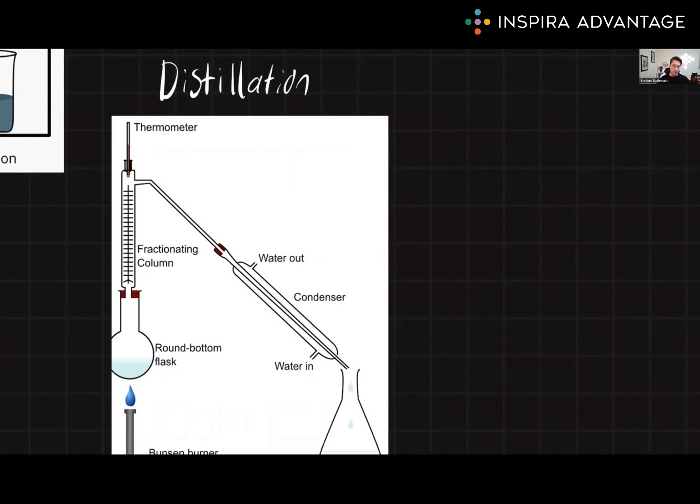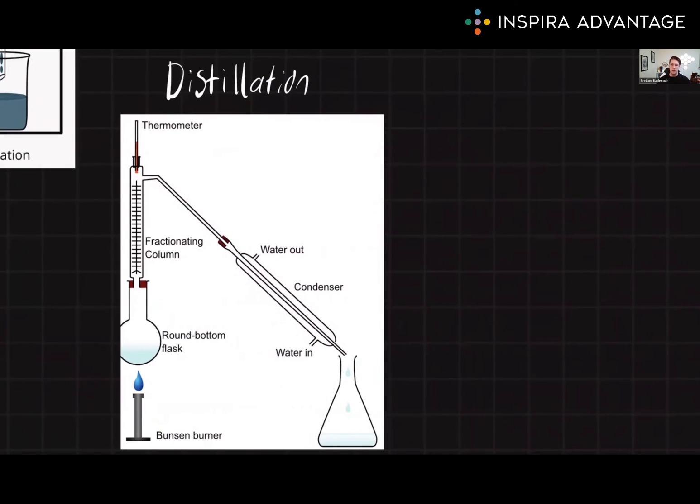Finally, we have distillation. Distillation is used to separate liquids based on their boiling points. During distillation, a mixture of liquids is heated to boiling, and the vapors are condensed and cooled in a separate container. The collected vapors can then be analyzed for further reactions or whatever you want to do with them.